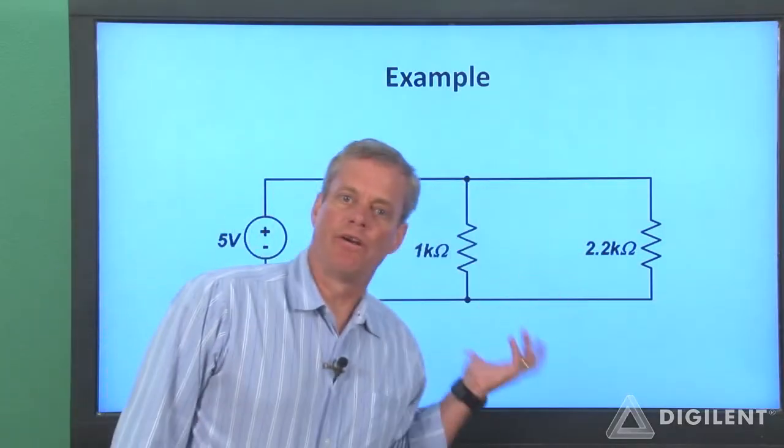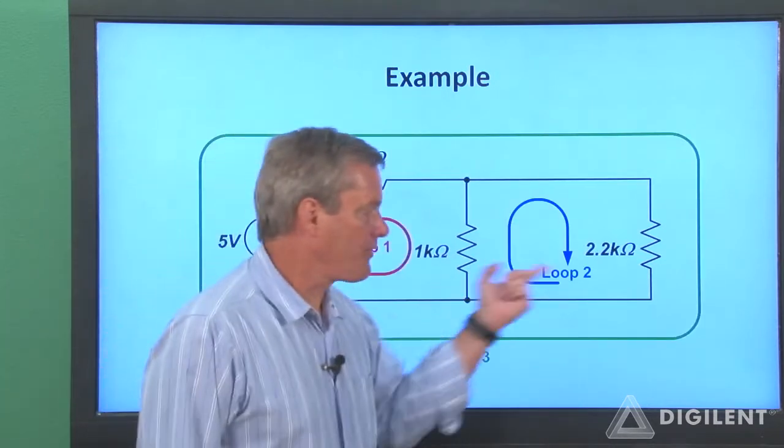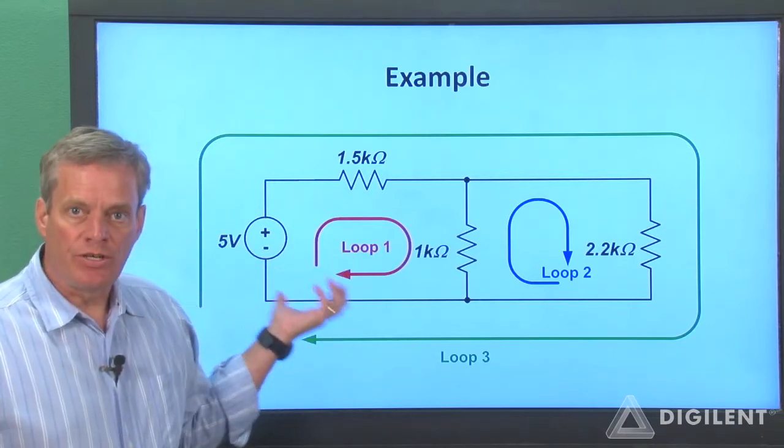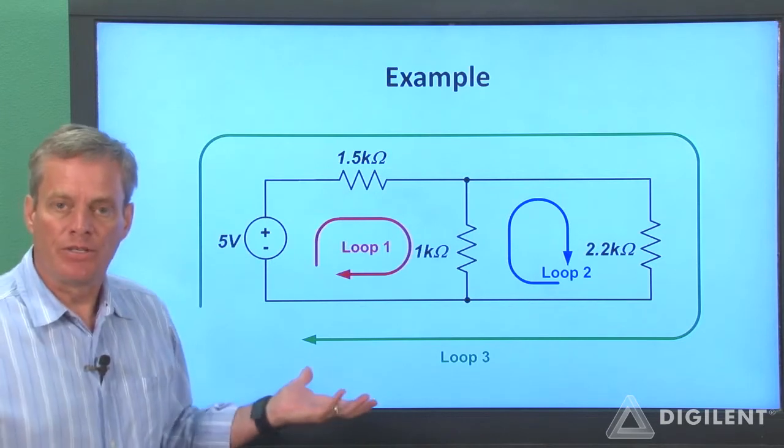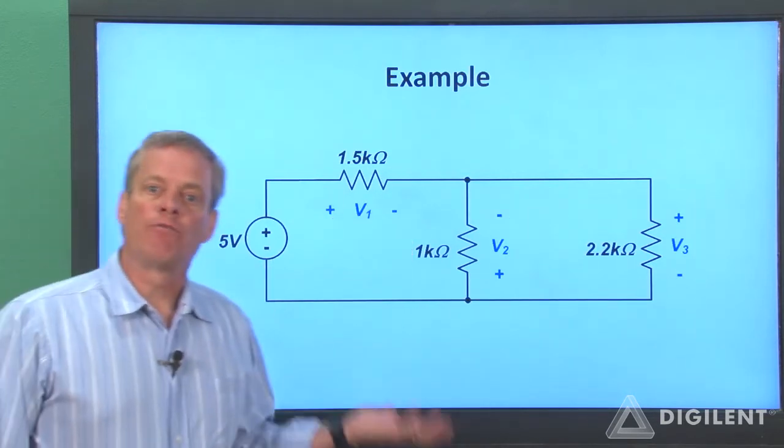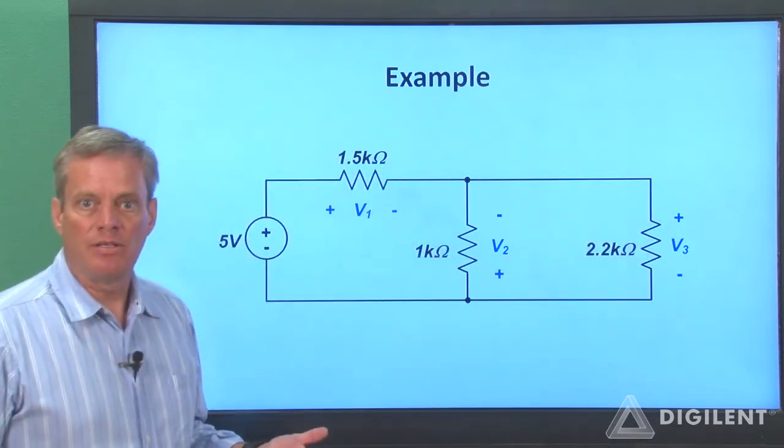Here's the circuit we'll use as our example. We'll apply KVL around all three of these loops. Since all the voltages in the circuit are used in one loop or another, we'll measure all the voltages in the circuit. In order to measure the voltages, we need to define reference polarities. I arbitrarily chose these as my reference voltage polarities.